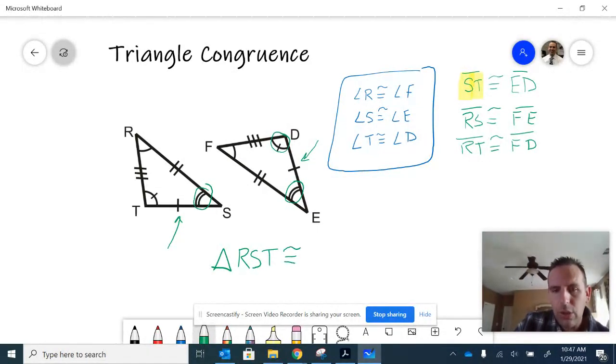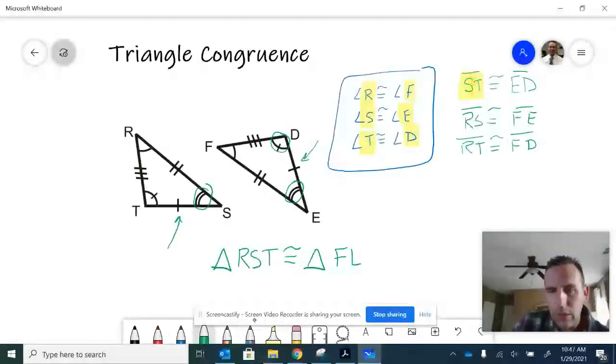the triangle on the left, is congruent to the triangle on the right. Again, the order matters the way that we name those angles. R-S-T, then I would say F-E-D. I want those to correspond the way that I've written it down.